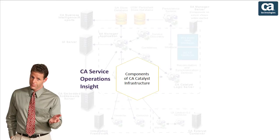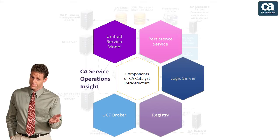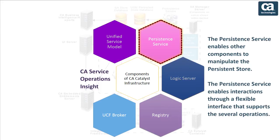Let us see the additional components of CA Catalyst infrastructure. The Unified Service Model, or USM, is the semantic schema used as the CA Catalyst and CASOI infrastructure. CA Catalyst provides the mechanisms to make all outbound connector data adhere to the USM schema. CASOI provides the interfaces to display the USM-compliant data. The Persistence Service enables other components to manipulate the persistent store through a flexible interface supporting several operations.